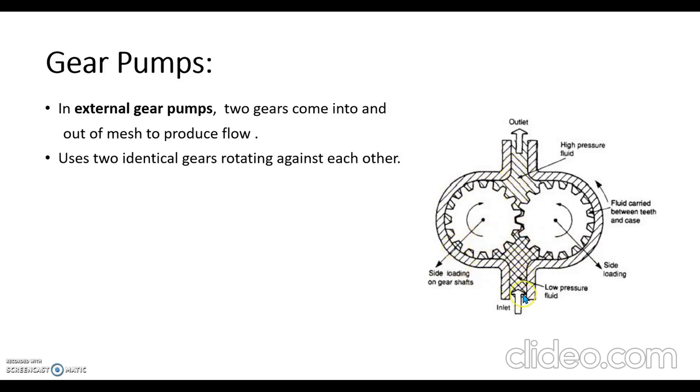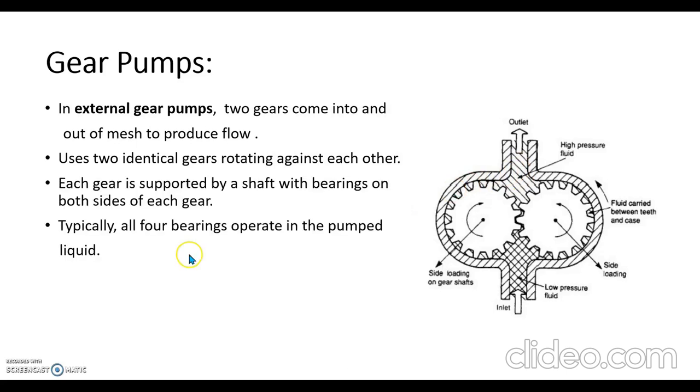This is inlet and this is outlet. Inlet flow will be of low pressure. It is pressurized as it passes through the small clearance between the teeth and housing. This is also the pathway of the fluid. Each gear is supported by a shaft with bearings on both sides of each gear. There will be a total of four bearings and it can withstand high pressure, so it is used in high pressure applications.